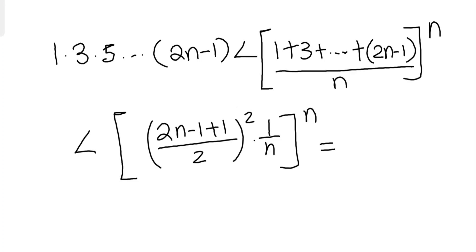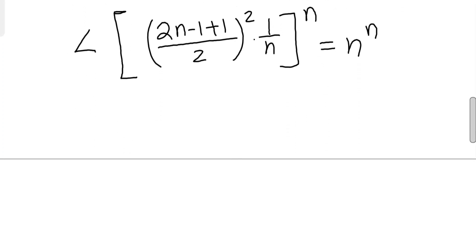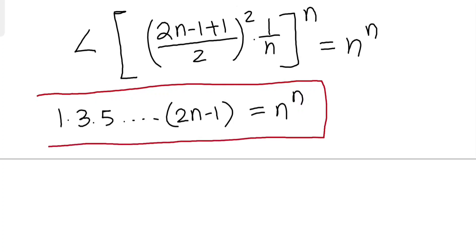Actually, I left one more term here. This will be equal to n^n. So this is our second equation for odd numbers. Now let's combine it.